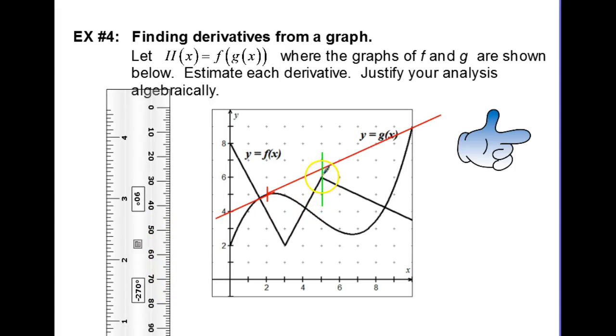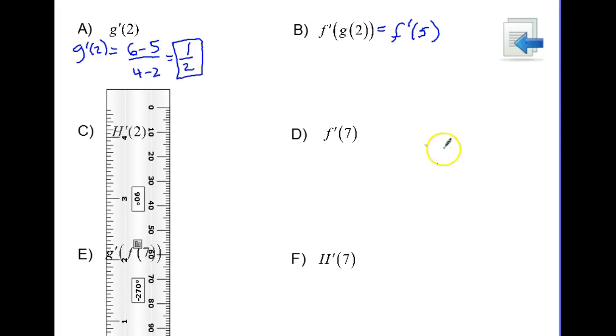But that's a sharp corner. So what that's going to mean for us is that F prime of 5 does not exist.